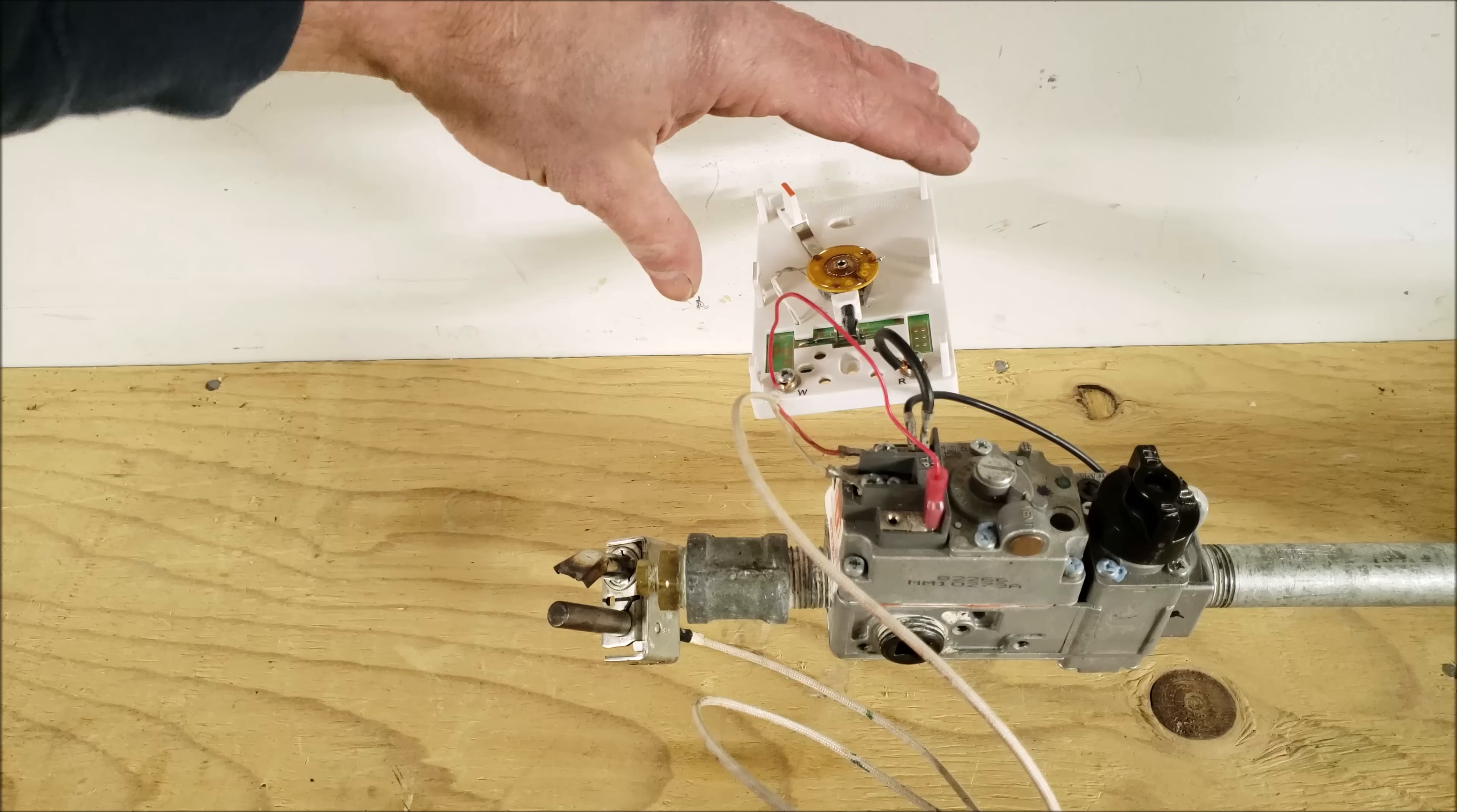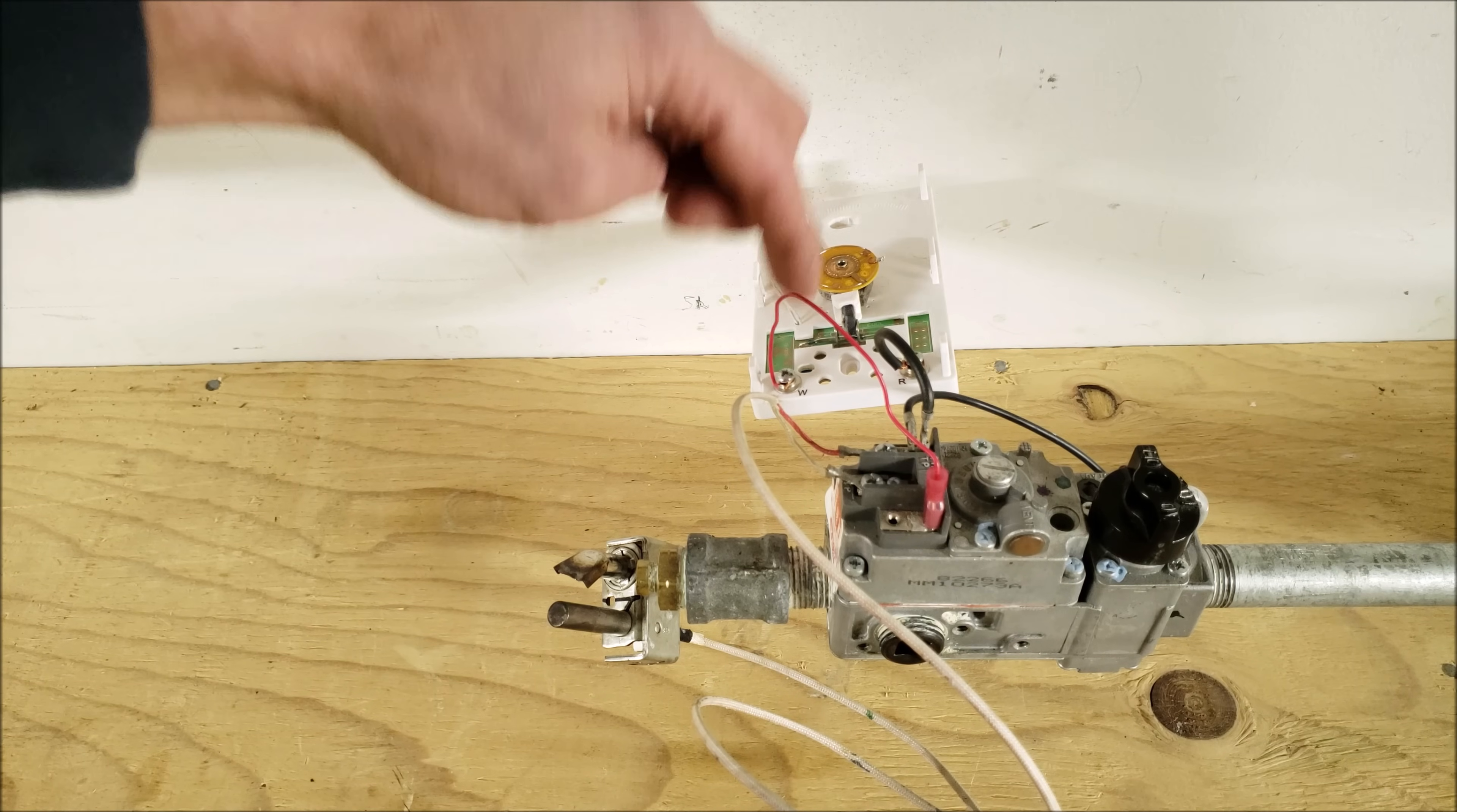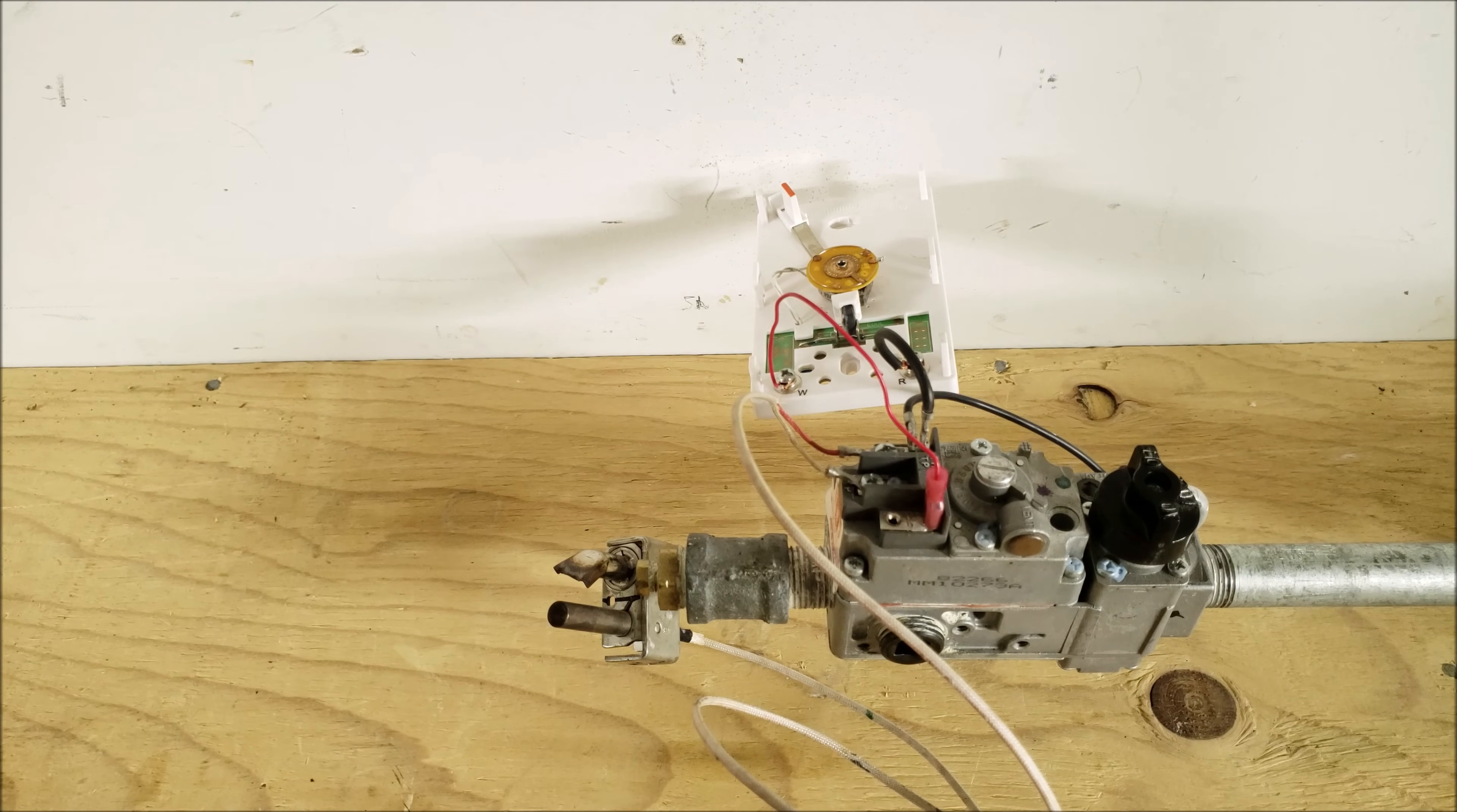So now we have our thermostat wired in for our main gas valve. We have our THTP connected to our R and this thermostat is normally open and then we have our W connected over to the TH. On a call for heat this will close allowing our millivolt power over to our TH in order to power the main gas valve.